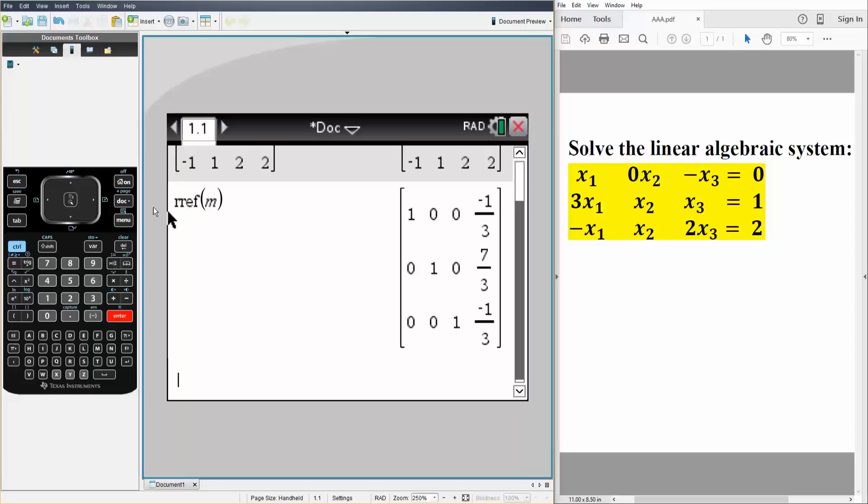But there may be a time where we do row reduced echelon form where, for example, this could be another one, and so what that would be saying is that x2 plus x3 is equal to this number. But for us it's in a nice form where it's separated out: so x1 is negative one-third, x2 is seven-thirds...